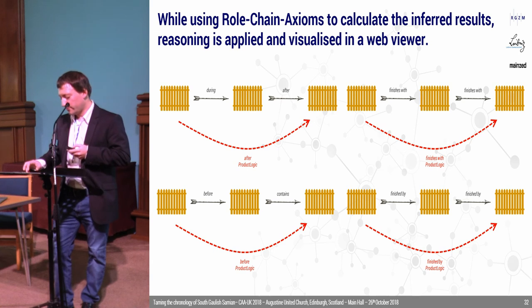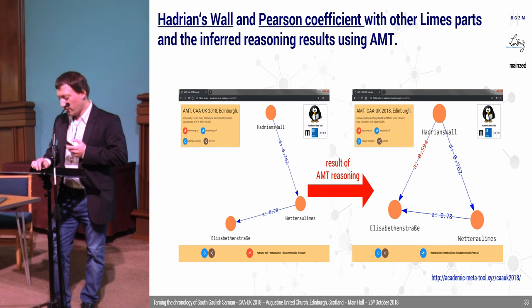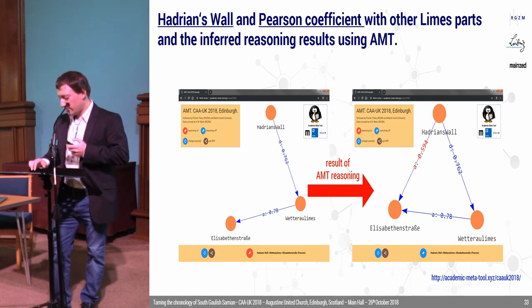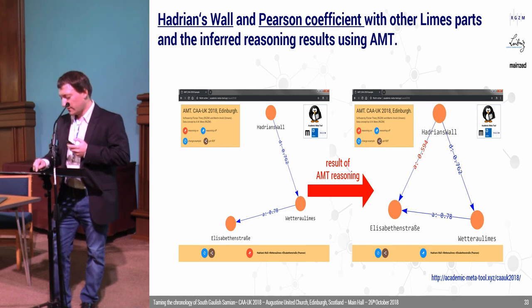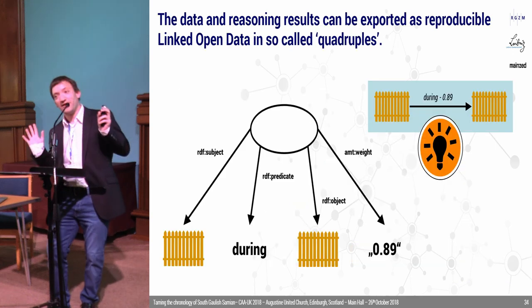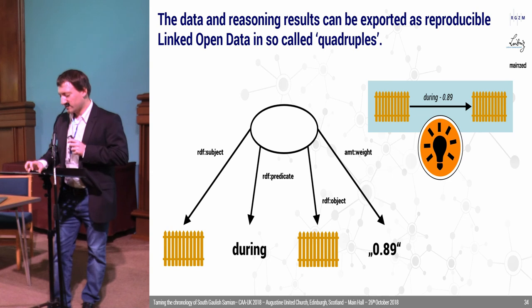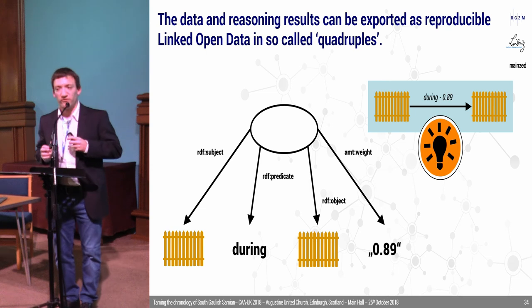The result of the Academic Meta-Tool will also be some kind of visualization. For example, we have Hadrian's Wall with some Pearson coefficients with other Limes parts. Here you can see what the reasoning results will be: Hadrian's Wall is 'during' the Wetterau Limes phase with a degree of 76%, and the Wetterau Limes is 'after' Elisabettenstrasse with a degree of 78%. So the conclusion will be that Hadrian's Wall is after Elisabettenstrasse with nearly 60% — which could be possible. It's just a model and simulation. In the end, the data and reasoning results can be exported as linked open data in a quadruple — just a quadruple with some kind of provenance in it.